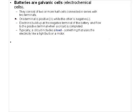We know from the study of galvanic cells that electrons are produced at the anode, because that's where the oxidation reaction occurs. Remember: LEO is an ox — loss of electrons is oxidation. So the negative terminal of a battery is the source of the electrons.